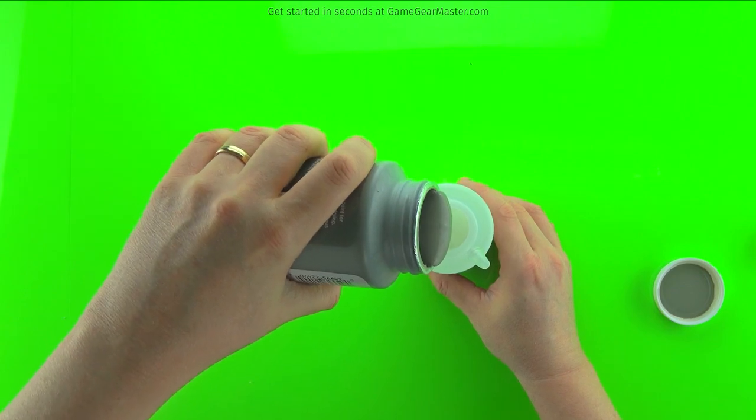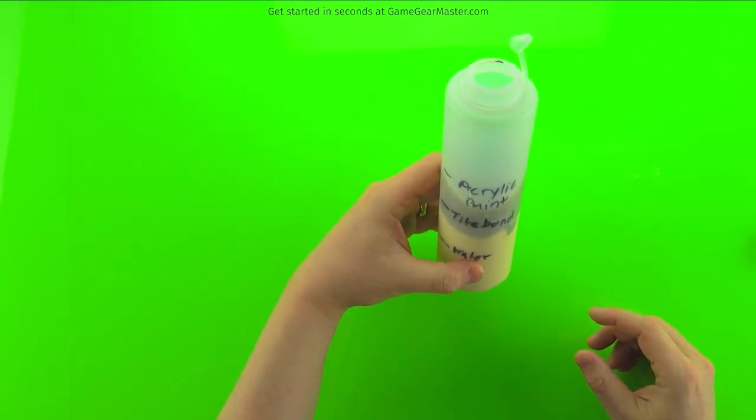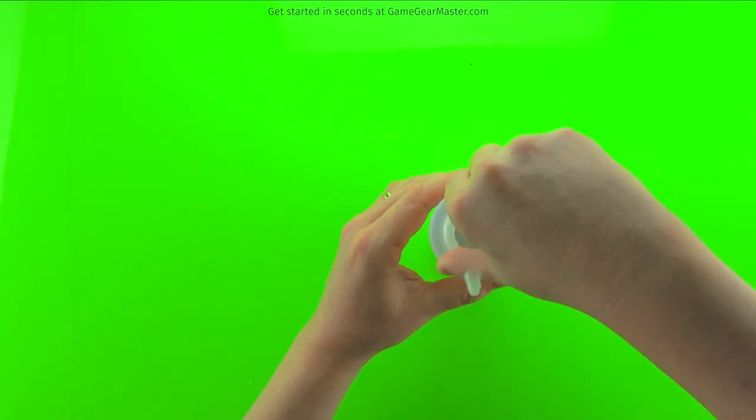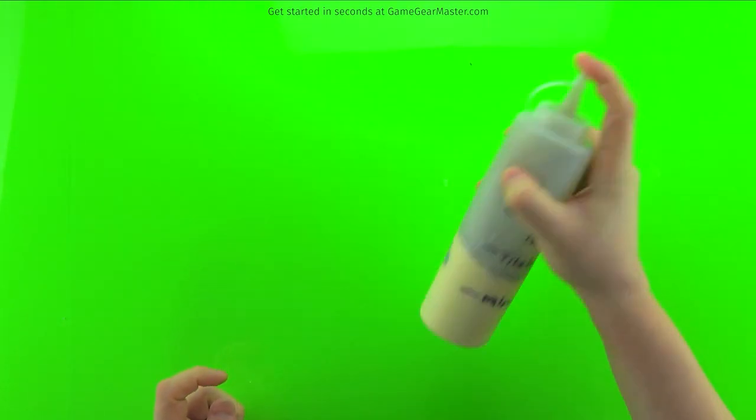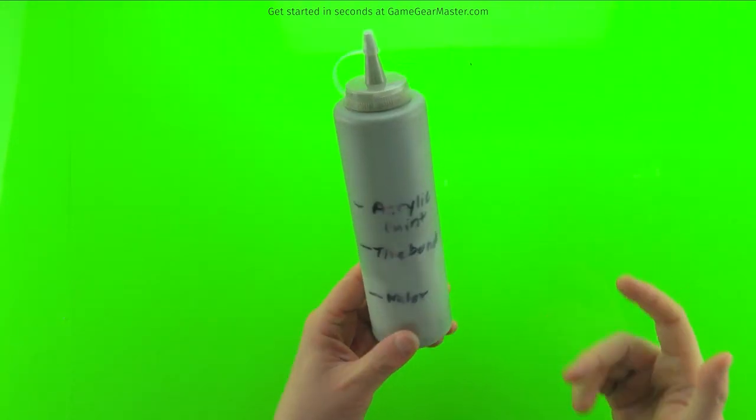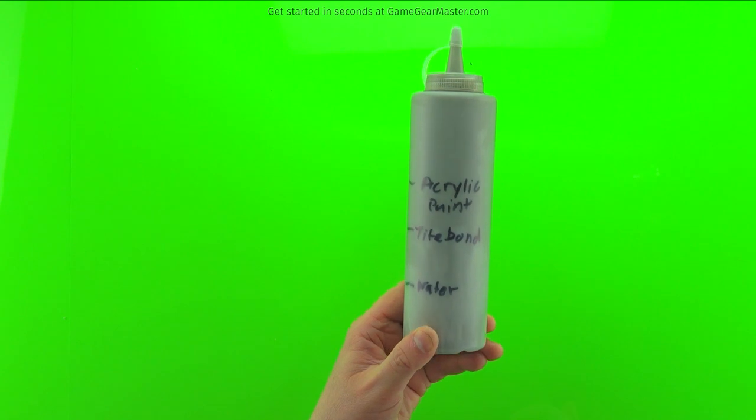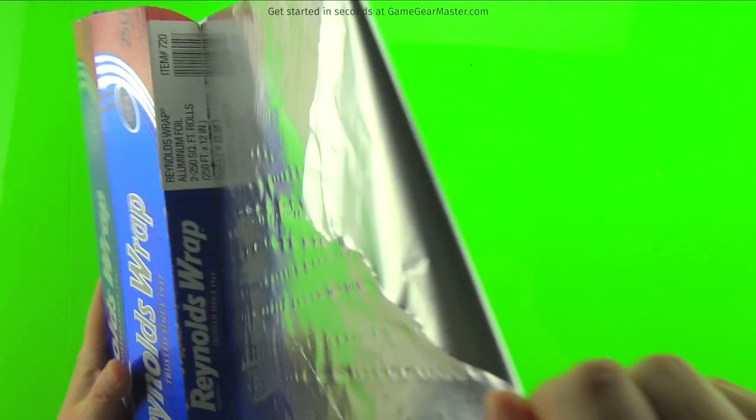You just put equal parts of the Titebond, acrylic paint and water and once you have all the parts in there you're just gonna seal it up tight and I like to hold the top when I shake it. You'll notice it's not completely mixed when I finish shaking. It never really will be the first time for some reason but that's good enough. That Titebond loves to cling to the sides of the squeeze bottle.